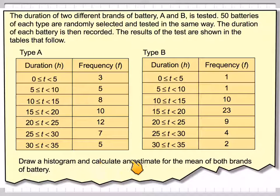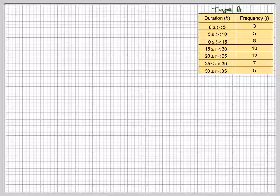Draw a histogram and calculate an estimate for the means of both brands of battery. So, drawing the histograms first.